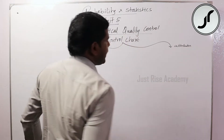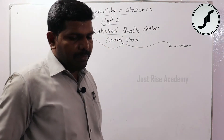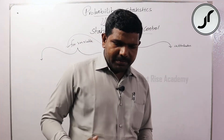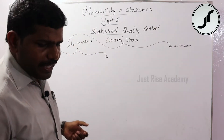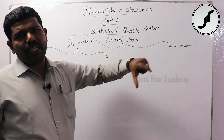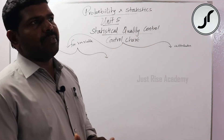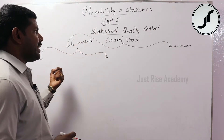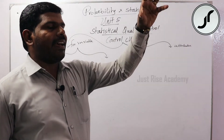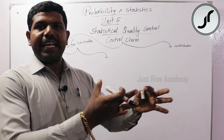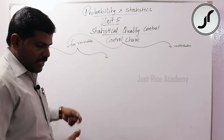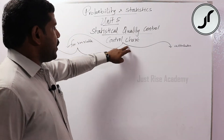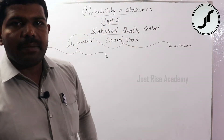The control chart for variables has two types. For variables, the data is measurable — for example, height of different people varies, so height is a variable. For attributes, we deal with defective items — that is one character of the data, such as whether an item is defective or not.